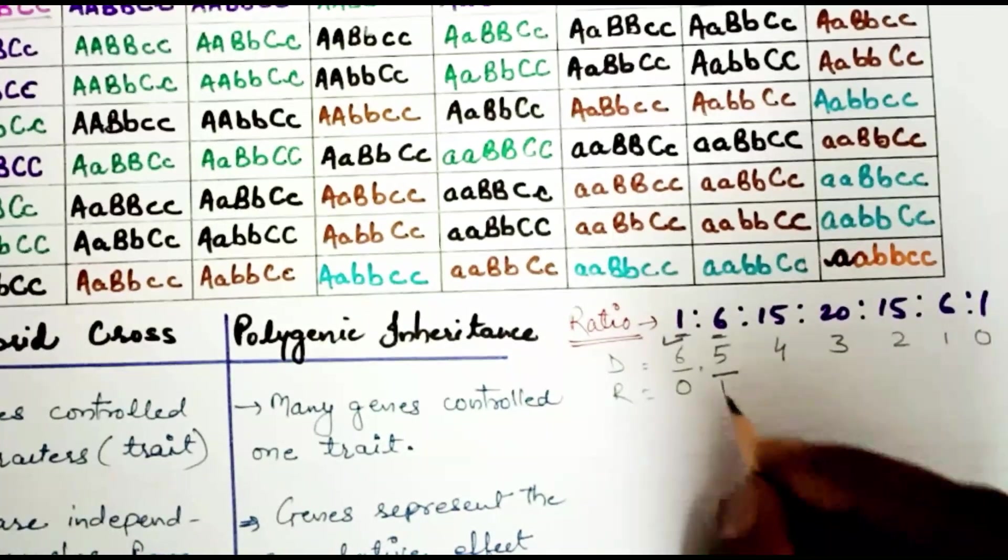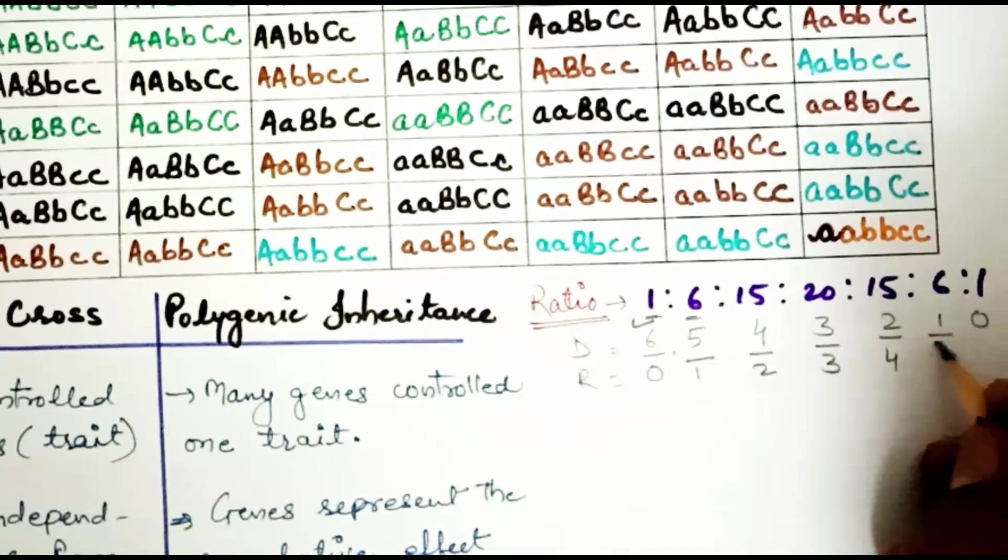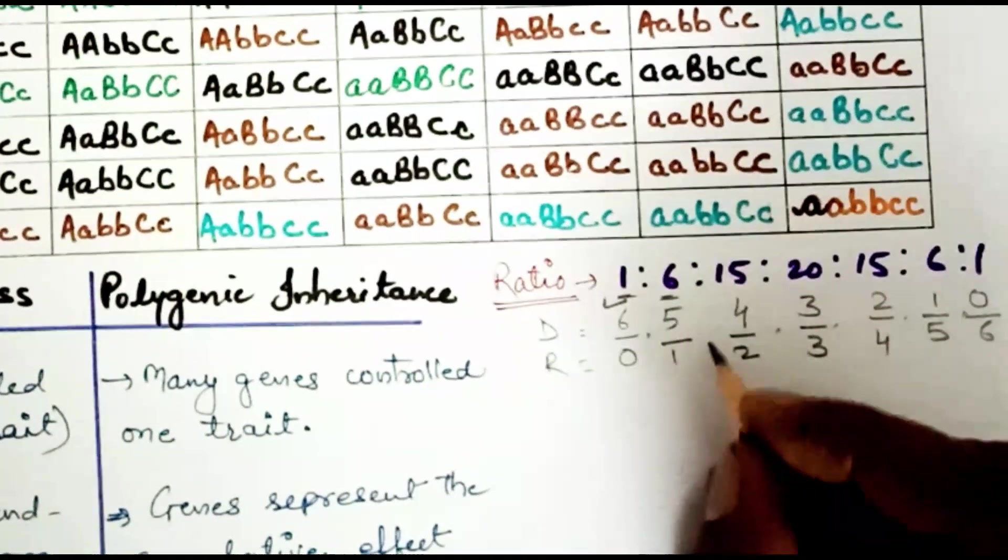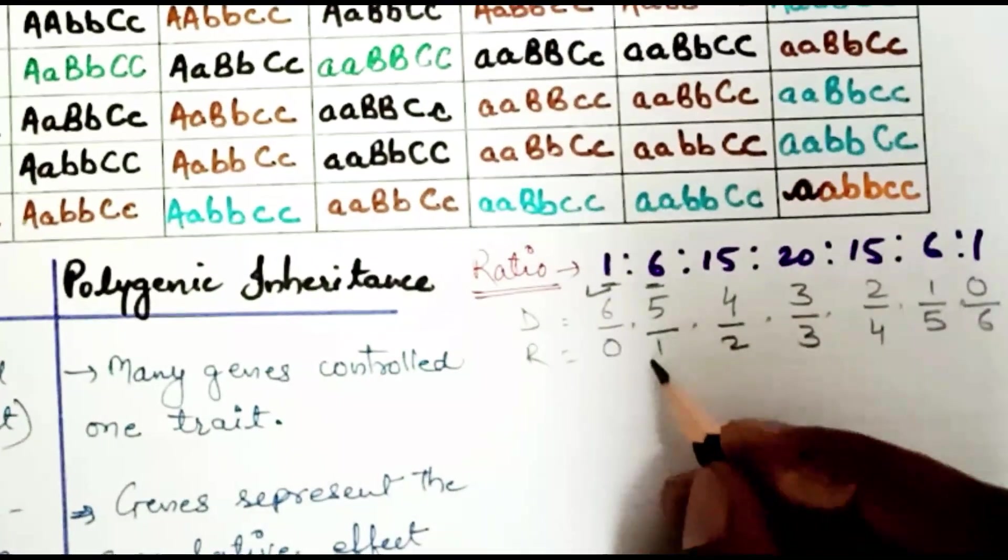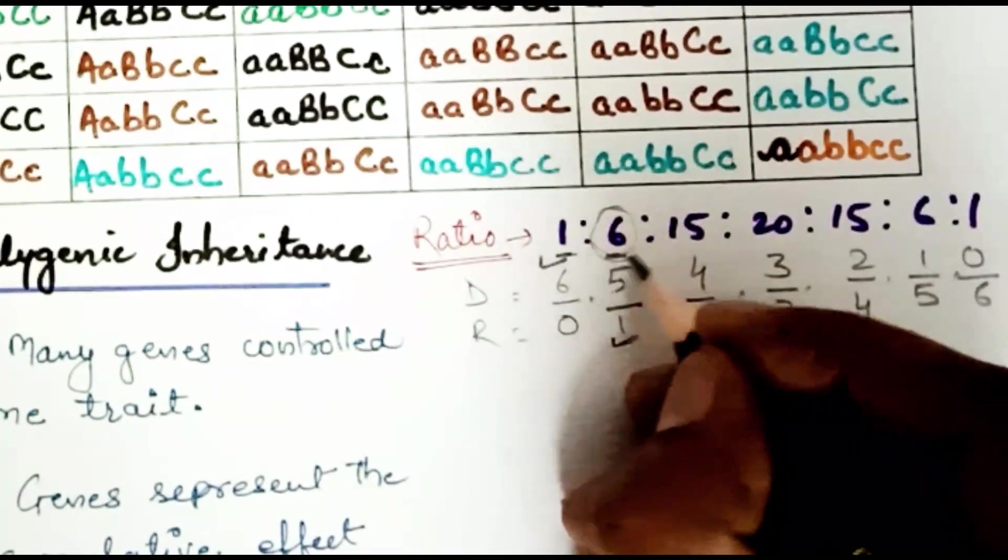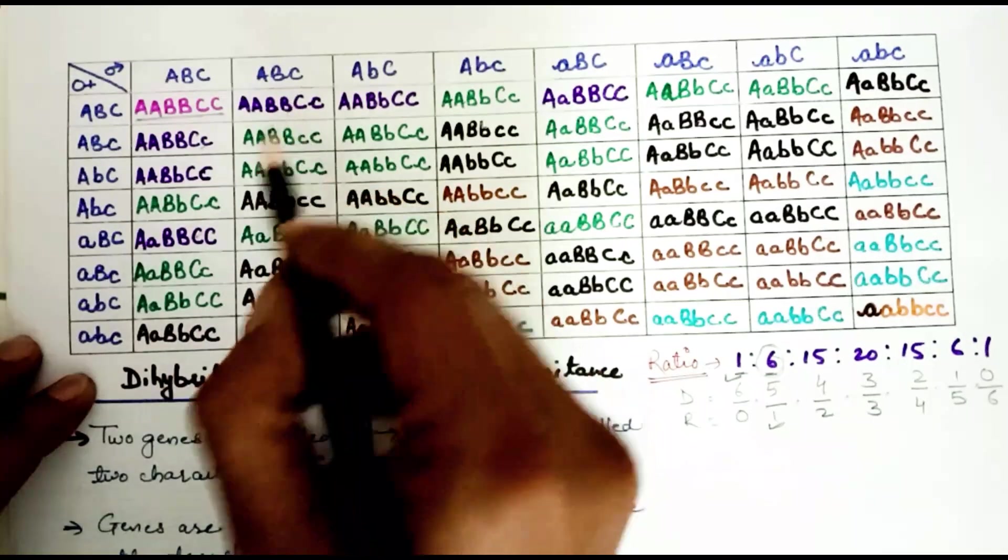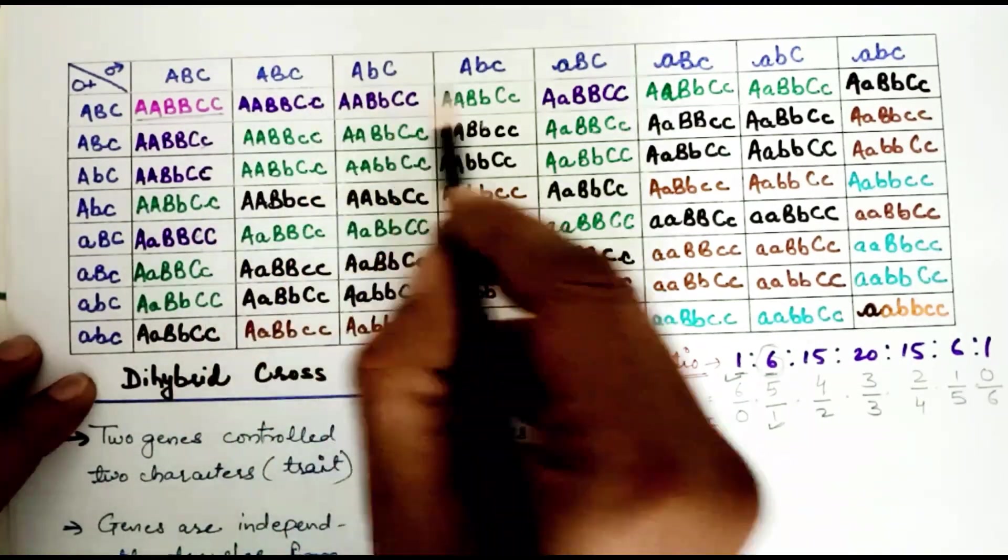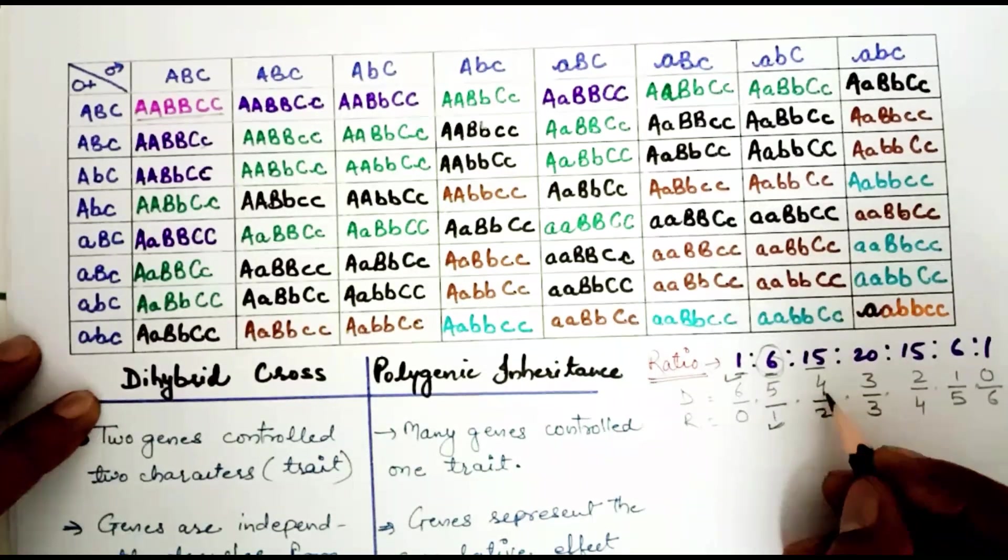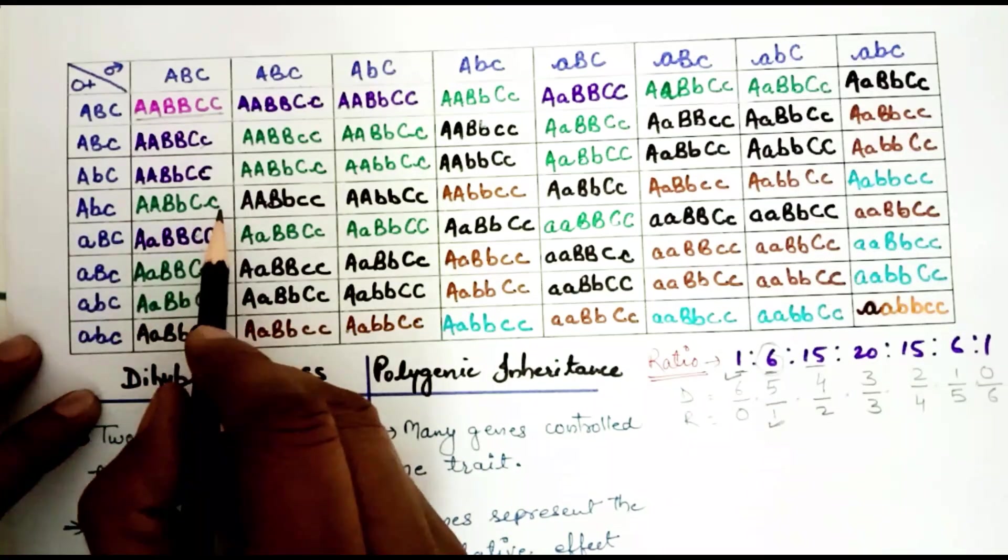We will be able to get 1, 2, 3, 4, 5, and 6 dominant alleles. This is 5 progeny with 5 dominant and 1 recessive. We will represent with purple colors: 1, 2, 3, 4, 5, 6. This is 15, which is 4 dominant and 2 recessive alleles. This is green color.